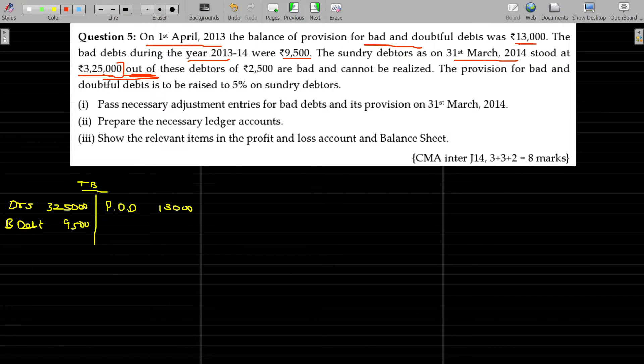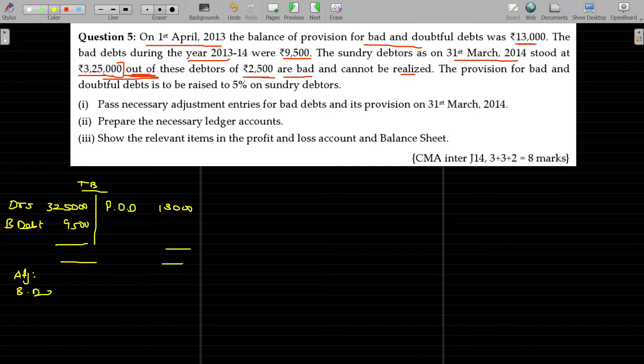Out of these debtors, 2,500 are bad and cannot be realized. It means still further 2,500 will be the bad debt. Might have been given in the adjustment, isn't it? So bad debt given in the adjustment being 2,500.